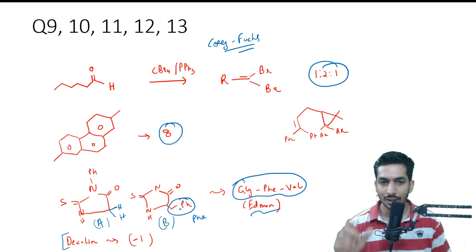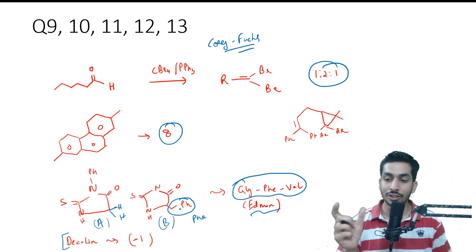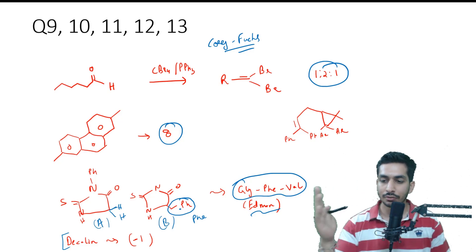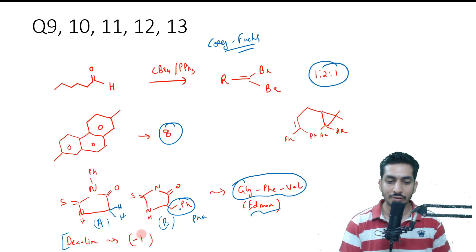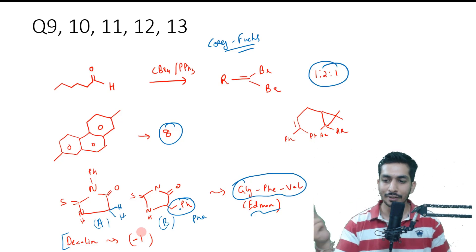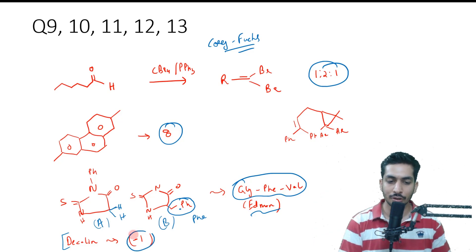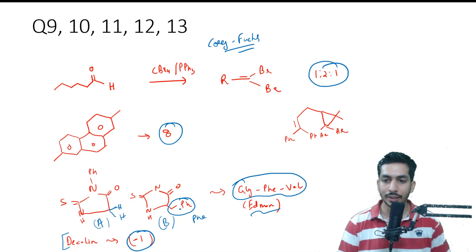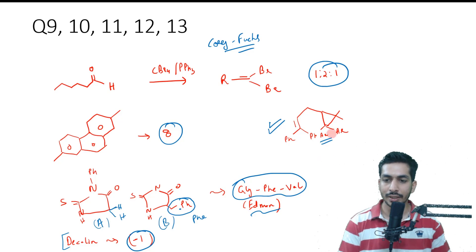There was also a question on trans- and cis-decalins, asking about gauche interactions and the net change in gauche interactions. The trans isomer will have four gauche interactions and the cis one will have five, so the net change will be one. I'm not sure whether it should be −1 or +1, but the net change is equal to one. Then there was a question on the di-pi-methane rearrangement — where the aryl group given was cinnamo-benzene — and this is the answer.